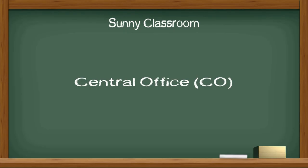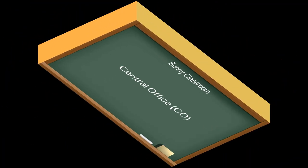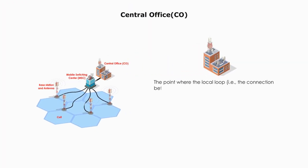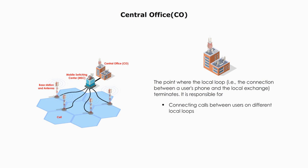Central Office. The Central Office is a point where the local loop terminates. It is responsible for connecting calls between users on different local loops,